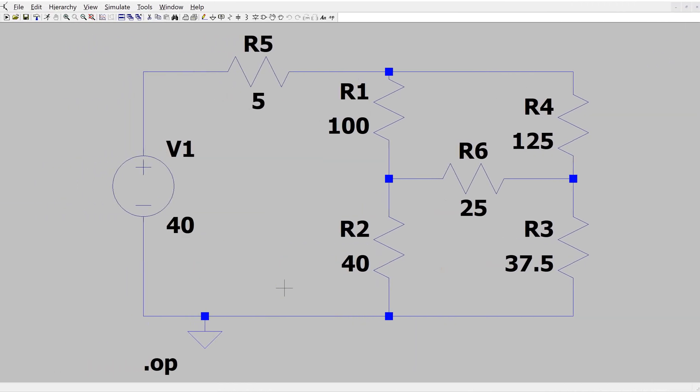We can use LTSpice to verify the solution. So this is the bridge circuit constructed in LTSpice, and if I hover the cursor over the 40 volt source, in the bottom left corner we can see that the power dissipation is minus 20 watt. So this confirms our solution.